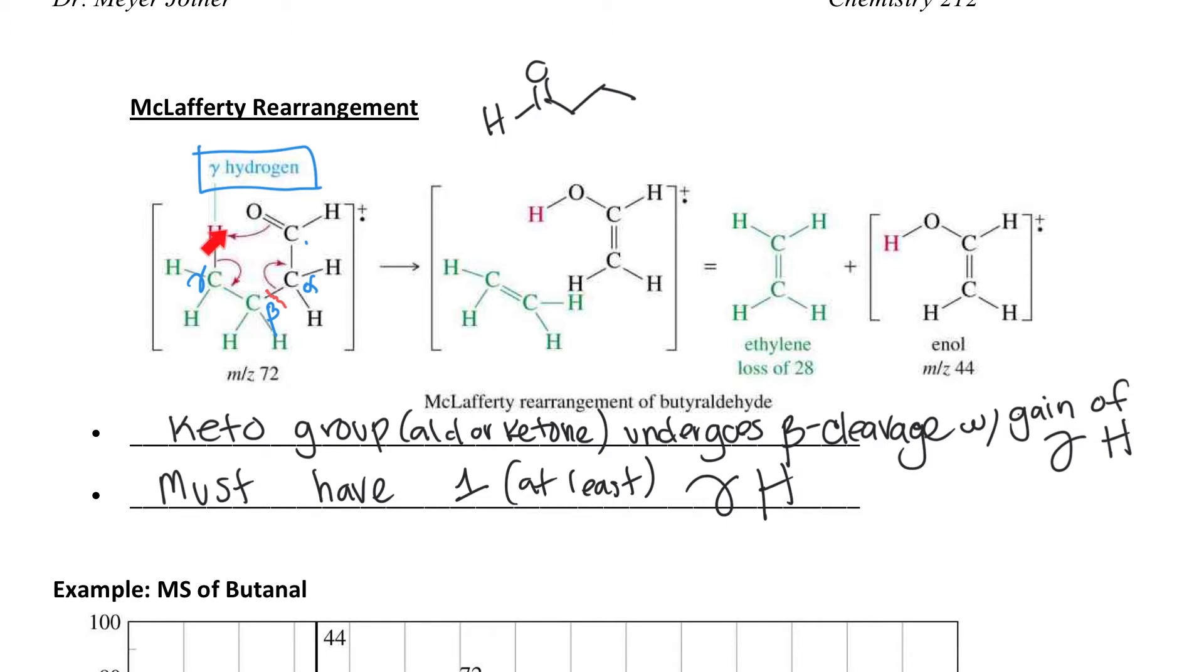The gamma H is being picked up by the carbonyl pi bond electrons. So these electrons leave this bond to pick up the H. Carbon's now electron deficient, but that is fixed by cleaving the alpha-beta bond to make an alkene. So far we have an OH and an alkene, that's an enol. That's this piece here, and you have your alkene here.